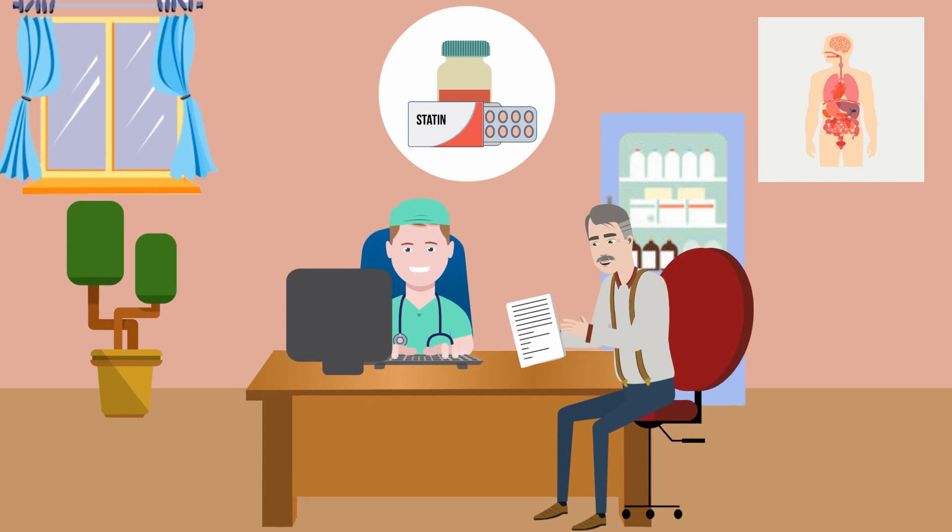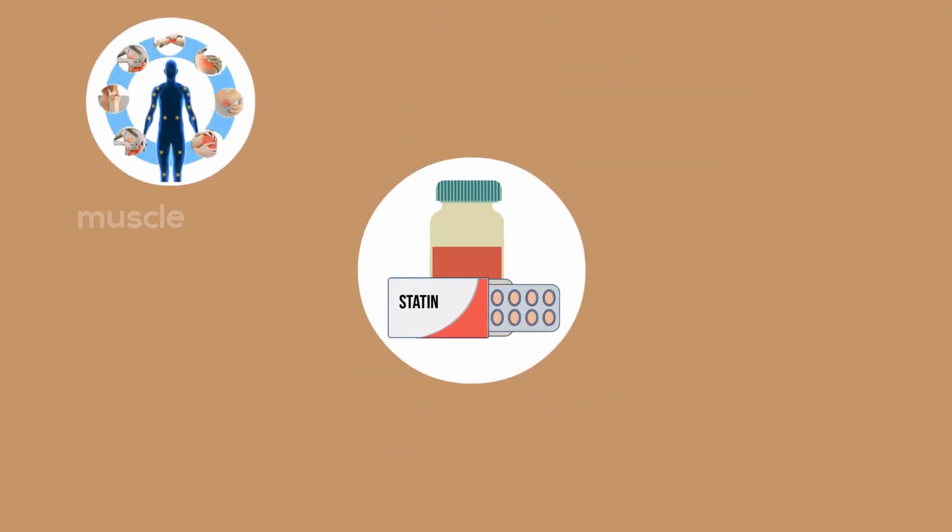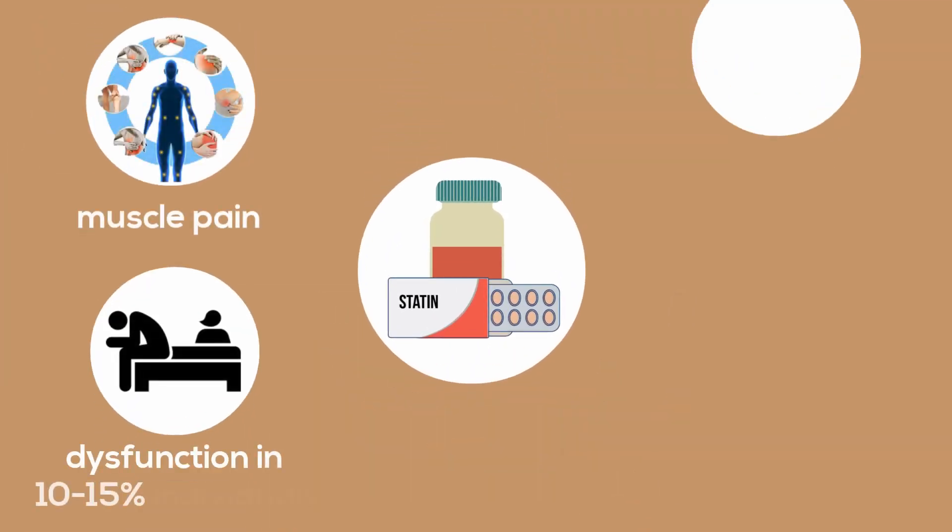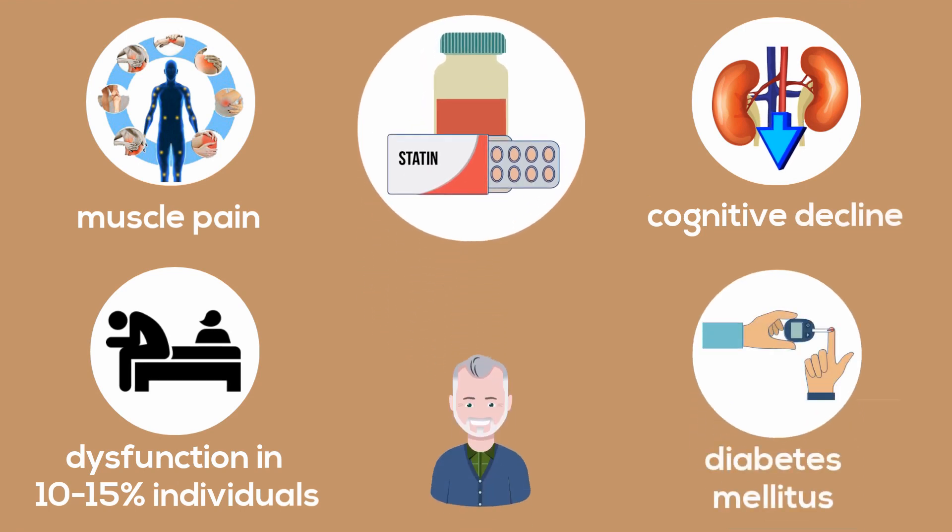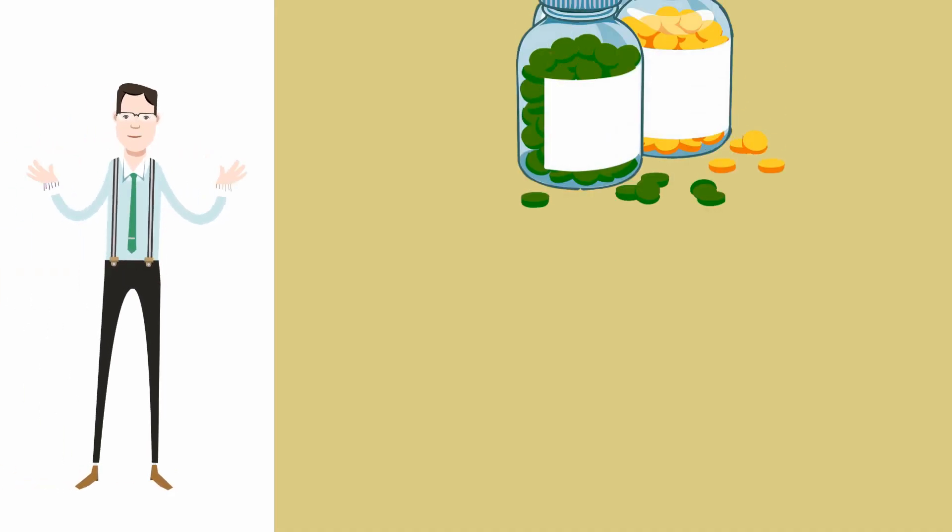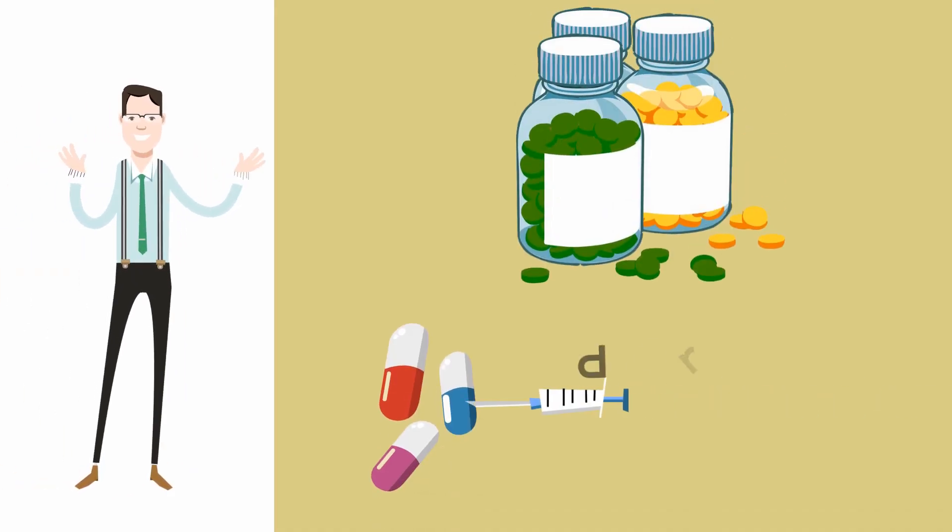Side effects include muscle pain and dysfunction in 10 to 15 percent of individuals, cognitive decline, and diabetes mellitus. You should be closely monitored after age 75. Proton pump inhibitors are recommended not to be taken longer than eight weeks except in high-risk cases.